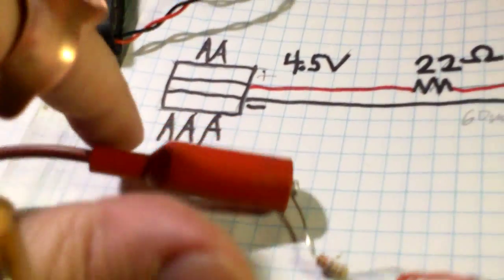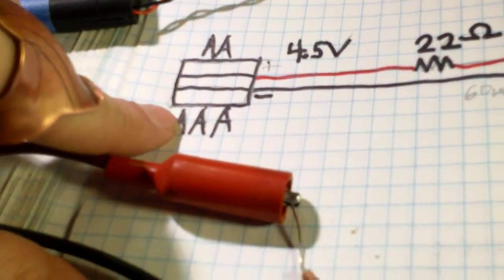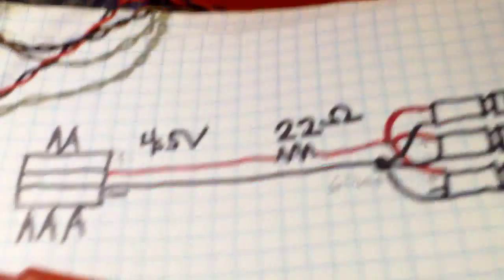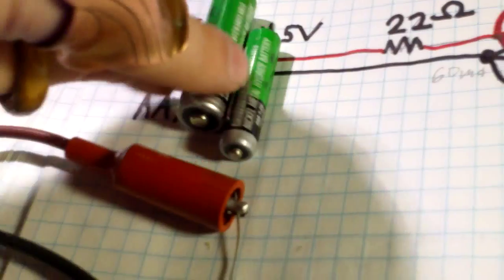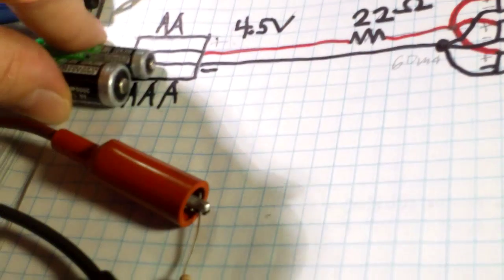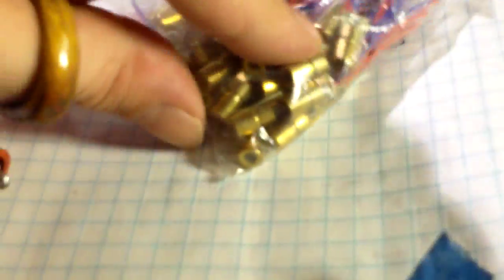And like I said, this will work for double-A batteries, the big fat ones, and the triple-A batteries. Yeah, double-A batteries. If you have three double-A batteries or three triple-A batteries, either way the voltage is still going to be the same. It's just the fat one's going to last a lot longer than the small one.